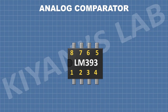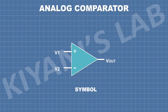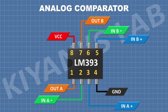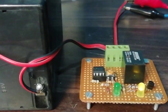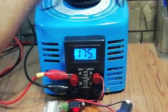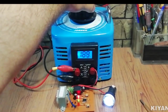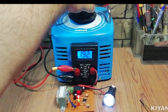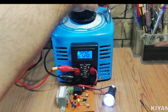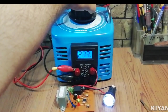In this video we are going to learn about analog comparators. Analog comparators are used in many circuits such as battery chargers, voltage and current protection circuits, and in many industrial and control circuits.